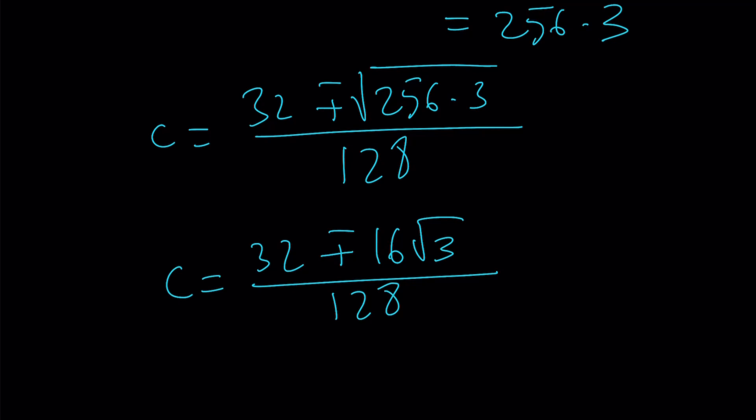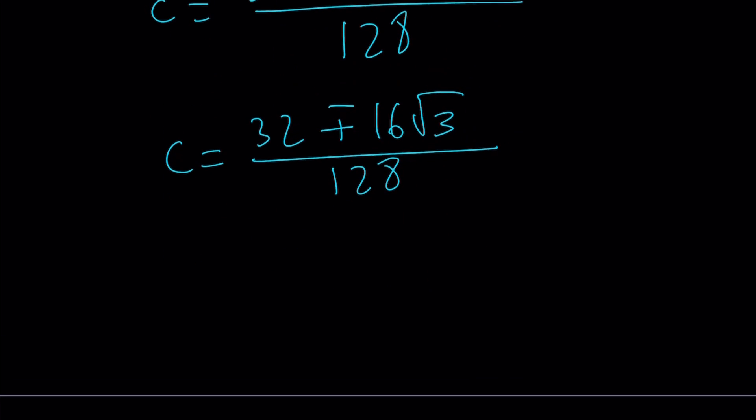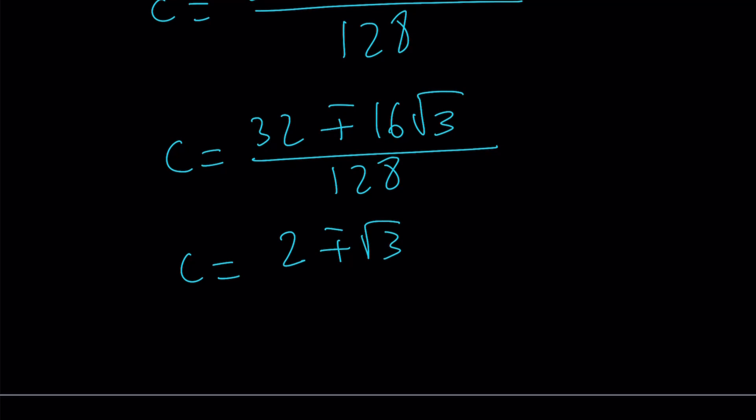So that gives me square root of 256 is 16, and I just have a 3 inside the radical. Now, this is good because I can go ahead and simplify. The greatest common factor is 16. So I can divide everything by 16, and that gives me something real nice. 2 plus minus root 3 divided by 8. So those are the C values.